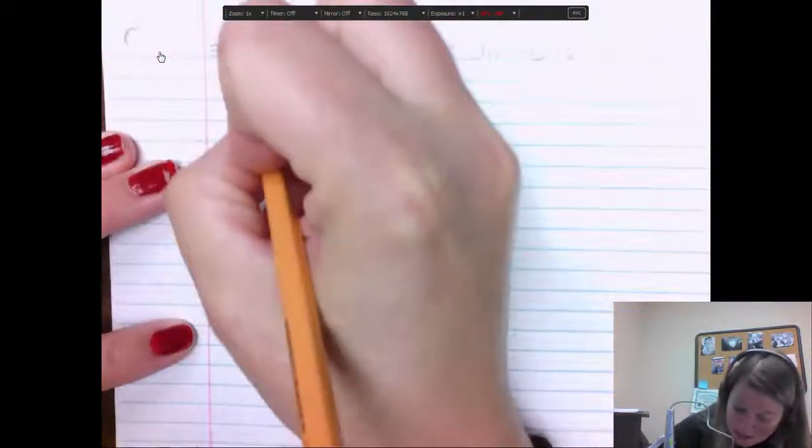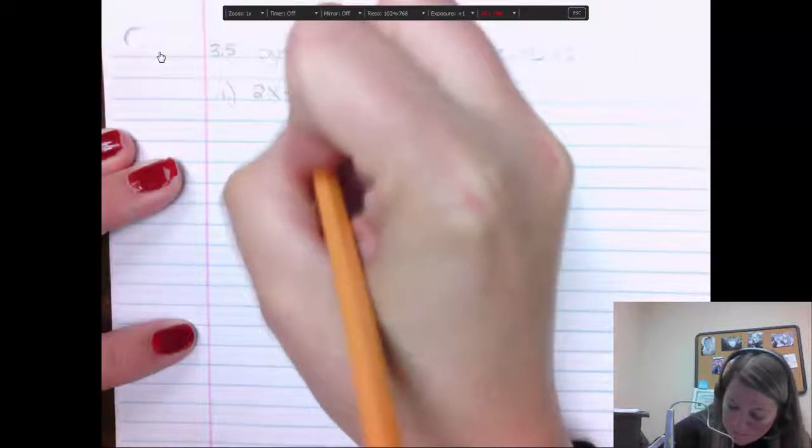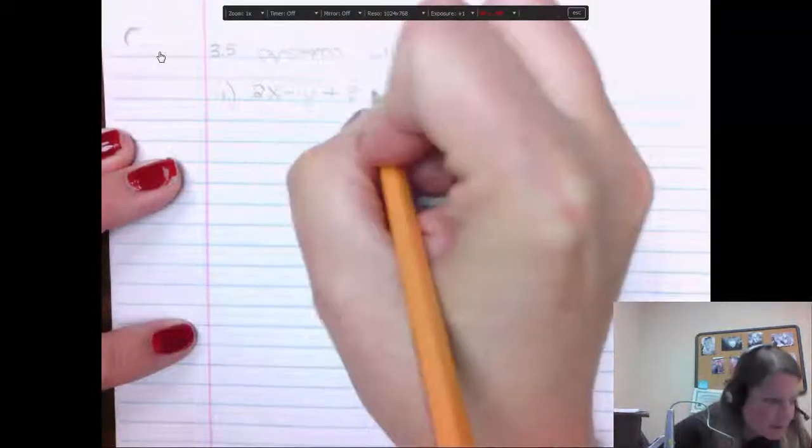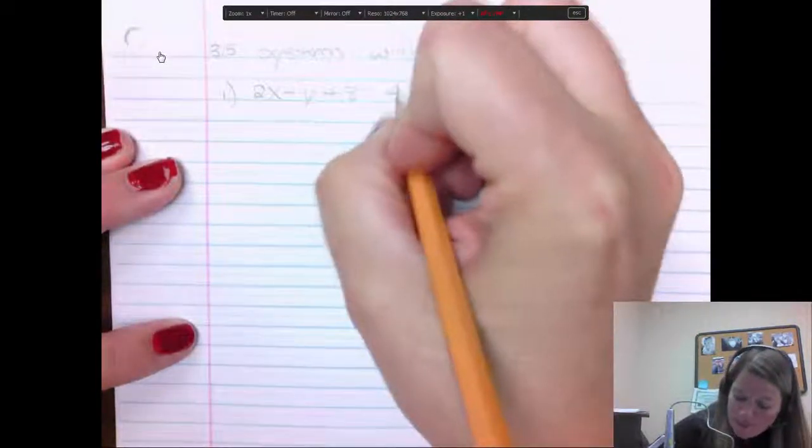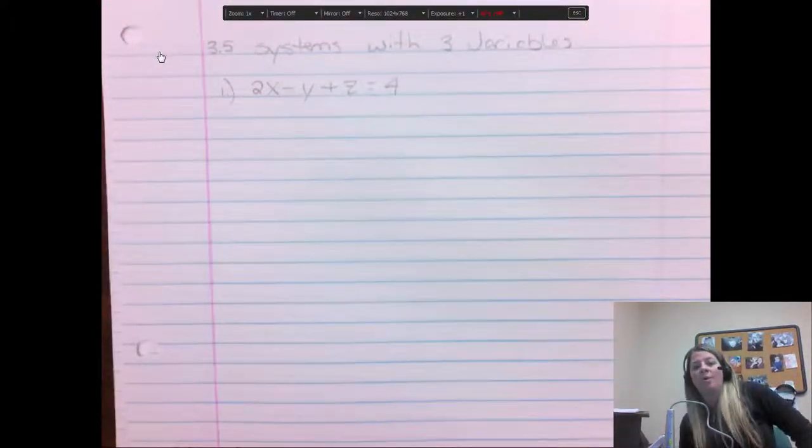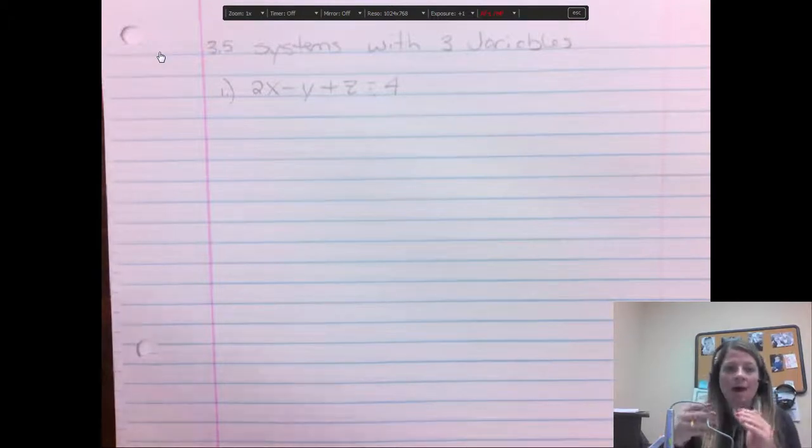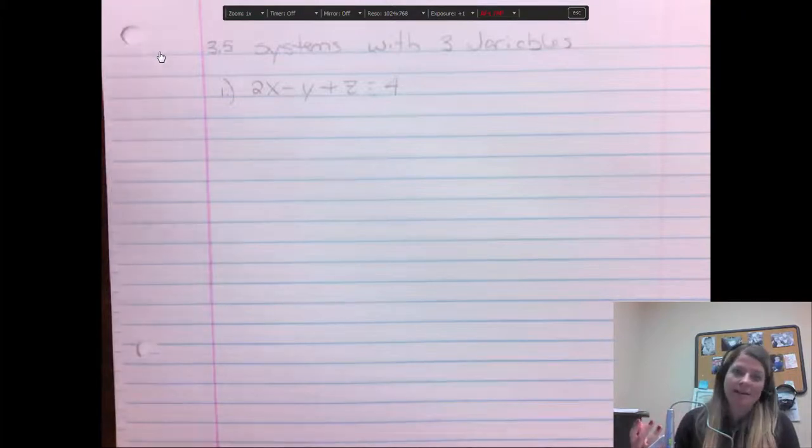So here's my first example. This is actually out of the book, but it's got 2x minus y plus z equals... Notice that if you have three equations and you have three letters that you don't know, x, y, z. And all the other problems that we were doing, you had an x and a y and two equations. So you had two variables, two equations. That's how it has to work.